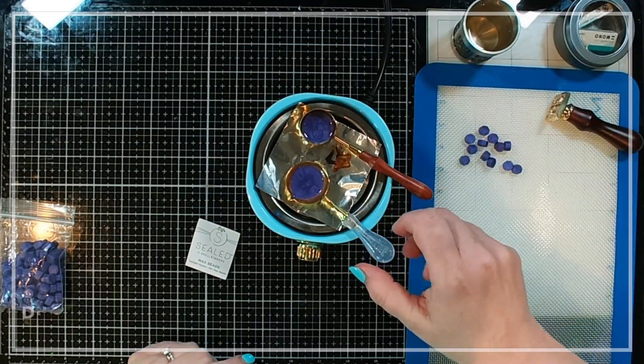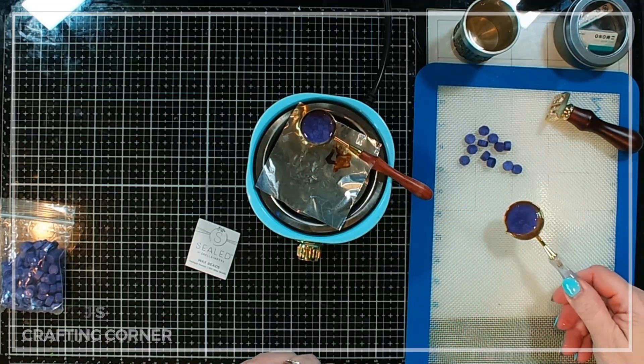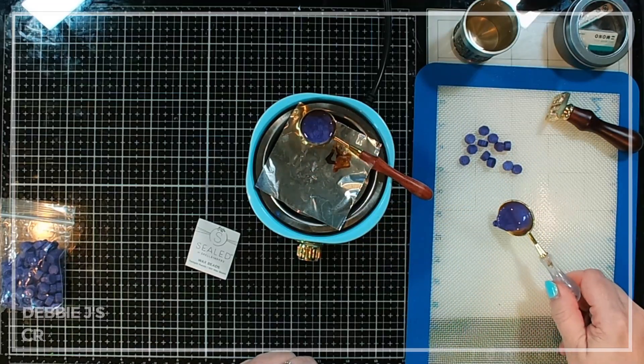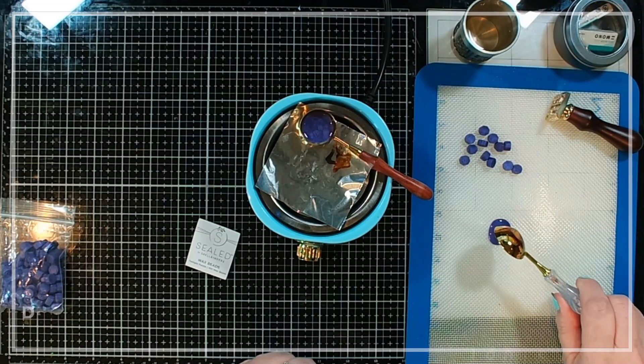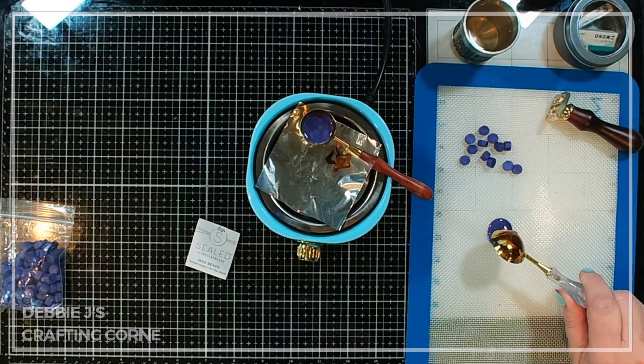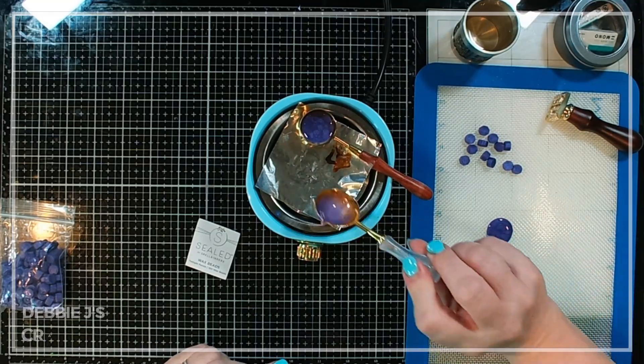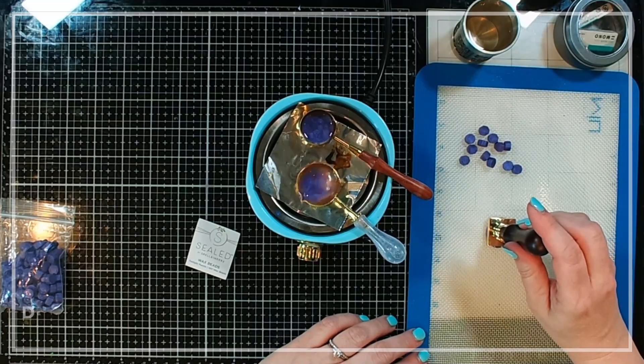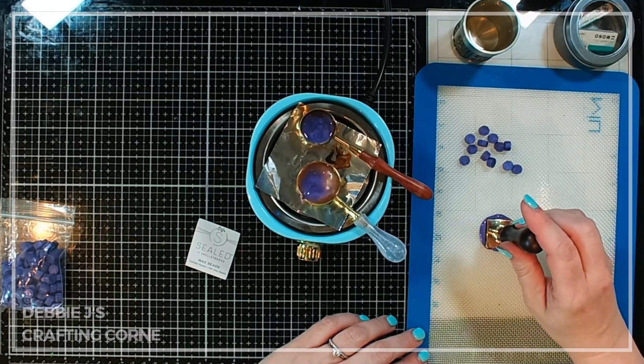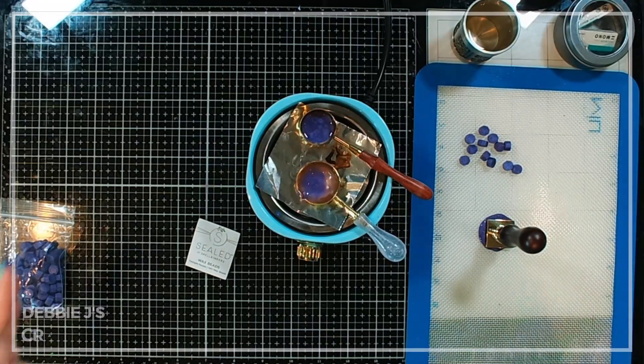Okay, so this is all ready to pour. So let's go ahead and pour out our first seal. And I only put four beads in which is usually the amount that I need but I don't know for sure with this square seal. So we'll see. And it looks like I didn't quite get it centered but that should still be okay.